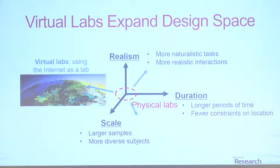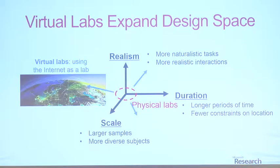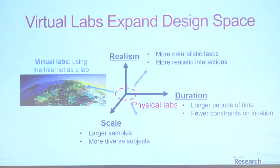One way to view this graphically is to imagine the design space of experiments along three dimensions: scale (how many people), duration (how long it runs), and realism or complexity. The real world is out somewhere at large scale, long duration, and high complexity. The vast bulk of experiments ever run in labs are indistinguishable from the origin: very small numbers, very short periods — typically less than an hour — and very stylized simple games. The challenge is whether we can use the web to push out that boundary and get closer to the real world. I'll try to give three quick examples.